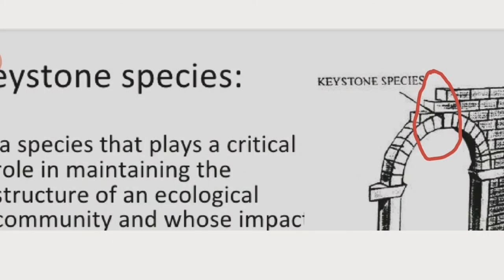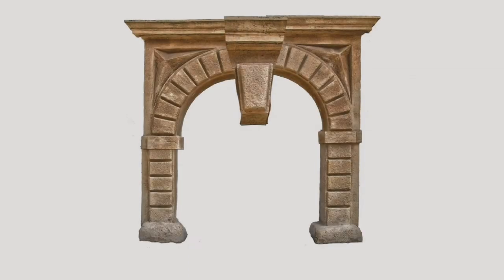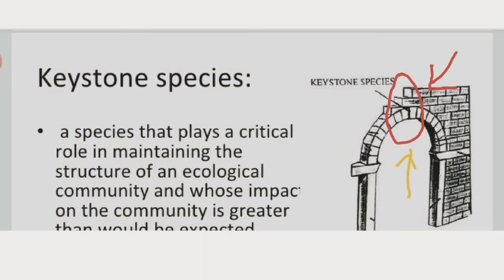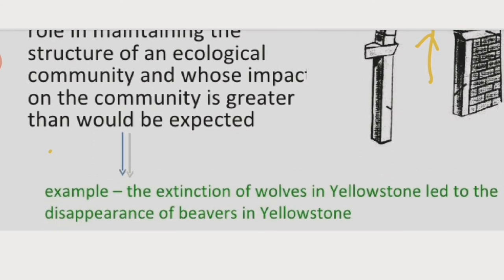A keystone species can be compared to the crownstone of an arch. The crownstone holds the arch together, and if it breaks, the entire arch collapses. Similarly, a keystone species plays a critical role in maintaining the structure of an ecological community, and its impact is usually greater than would be expected.